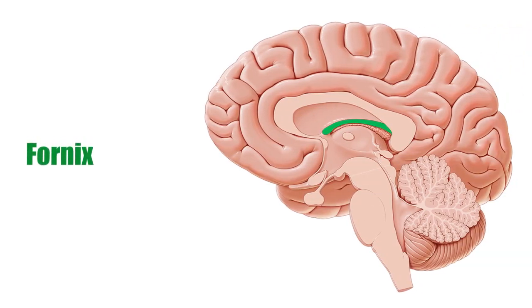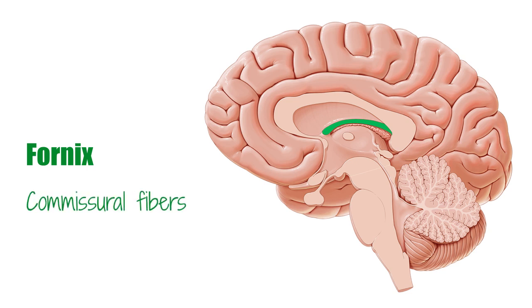The fornix is one of the commissural fibers of the cerebral hemispheres. Commissural fibers can be defined as a category of white matter of the cerebral hemispheres that connect identical areas of the cortices on the left and right side of the cerebral hemispheres.